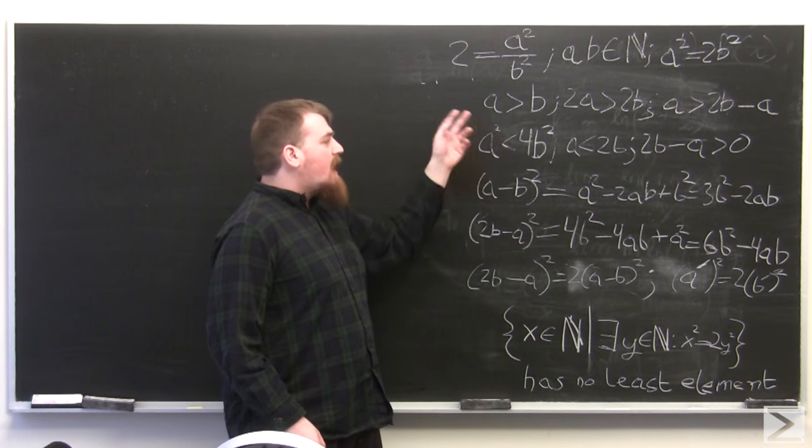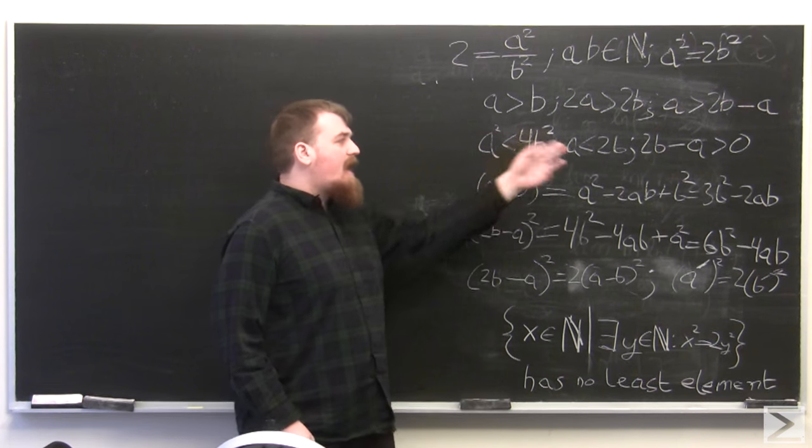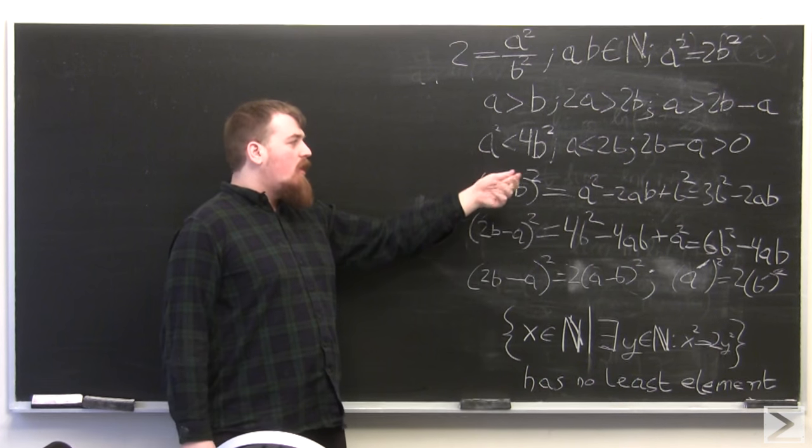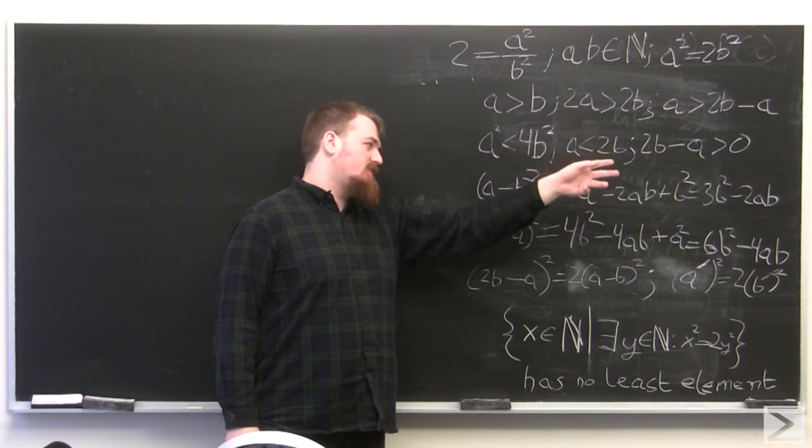So a is greater than b, and thus a minus b is greater than 0, and a is greater than 2b minus a. Since a squared is less than 4b squared, we have to have that 2b minus a is greater than 0.